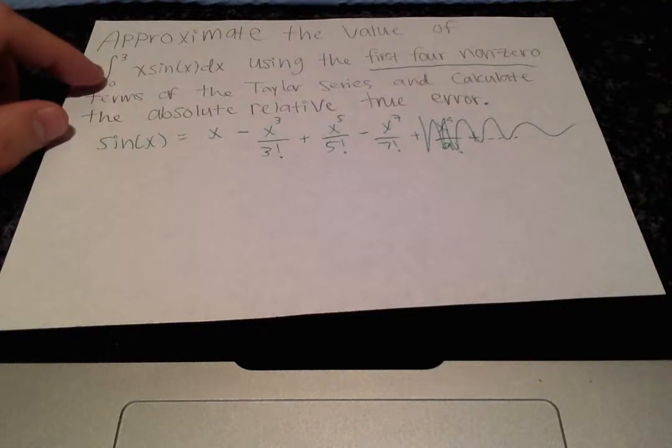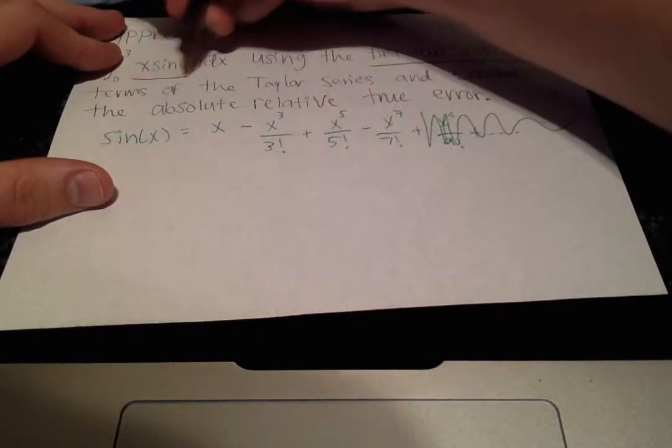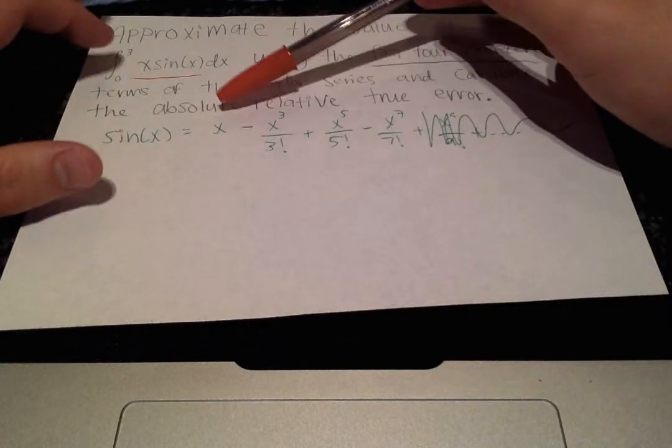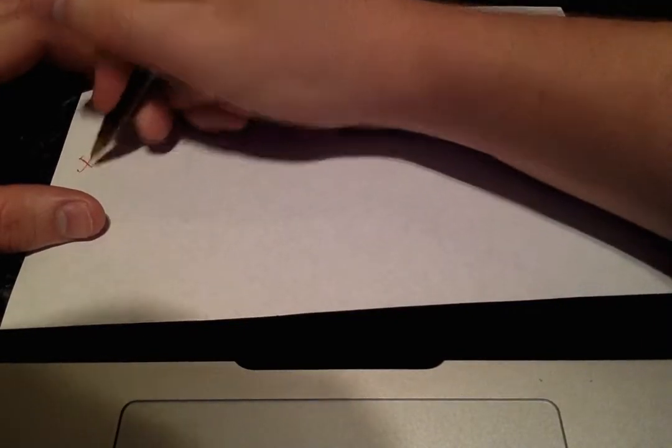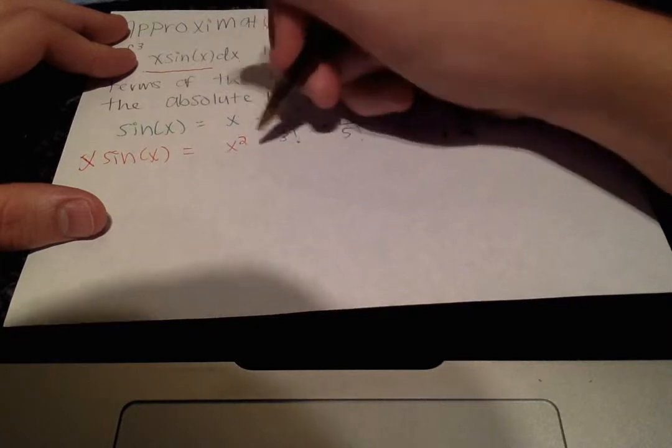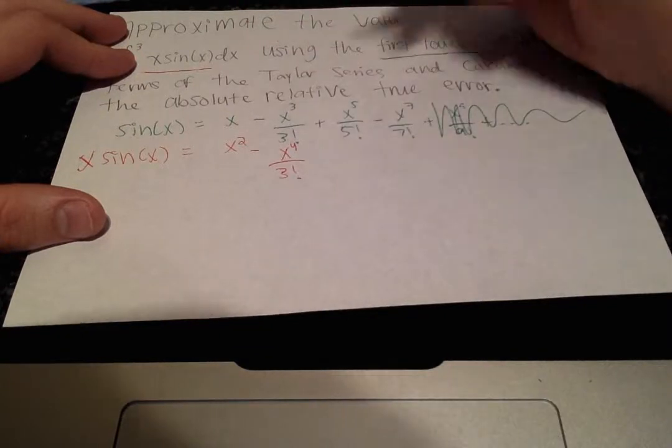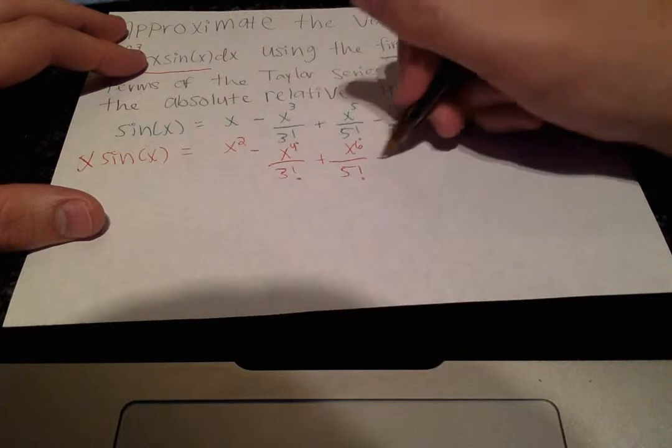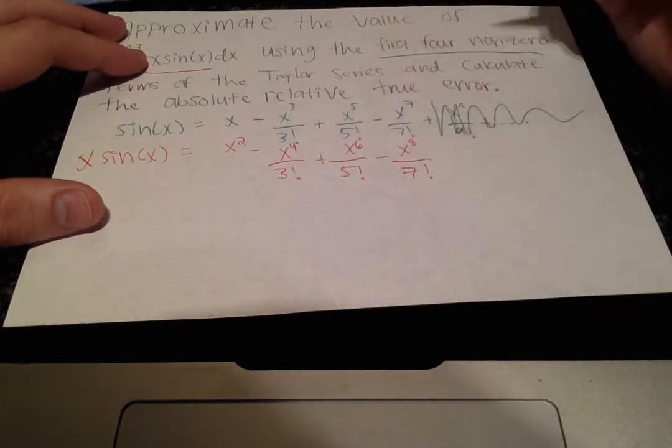So now that we have sin of x, we can find x sin of x by multiplying the expanded Taylor series, multiplying each term by x, so then we'll get x sin of x equals x squared minus x to the fourth over 3 factorial plus x to the sixth over 5 factorial minus x to the eighth over 7 factorial.